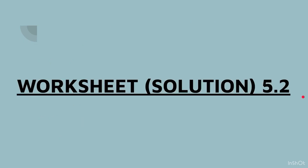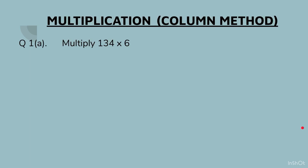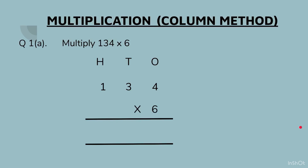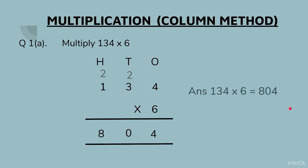Solutions to Worksheet 5.2. Part (a): 134 × 6. Write the place values and the question below it. Start with the ones column: 6 fours are 24 — write 2 at the top and 4 at the bottom. Next, 6 threes are 18, plus 2 carried gives 20 — write 2 at the top of the hundreds column and 0 at the bottom. Then 6 ones are 6, plus 2 gives 8. Answer: 134 × 6 = 804.